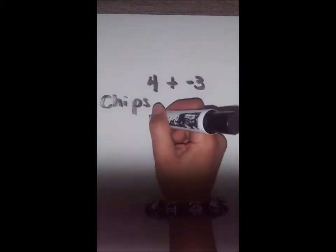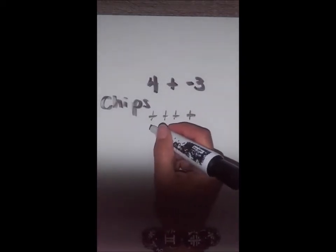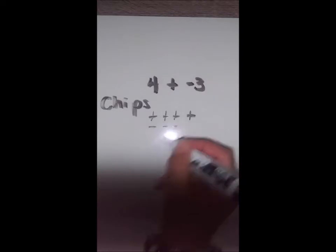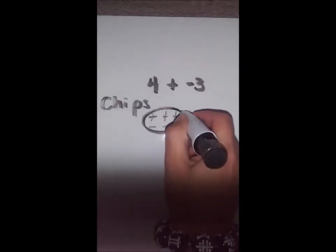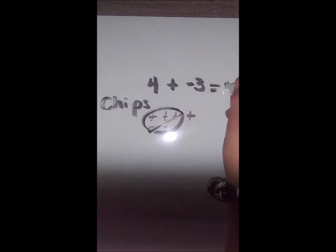So, I would draw four positives, and I would be neat about it. And across from them, I would draw the negatives, which there are three. These are three zero pairs that cancel. You can see the leftover is a positive one.